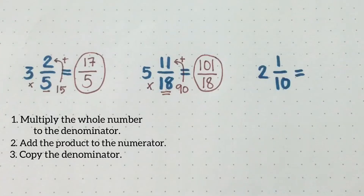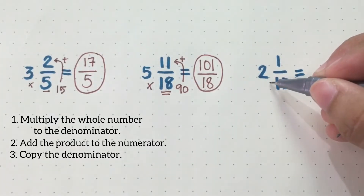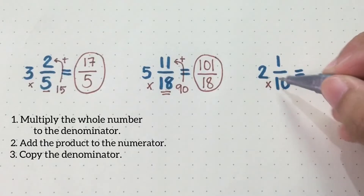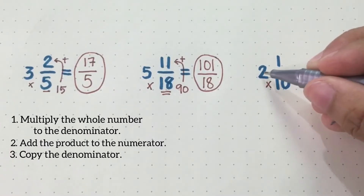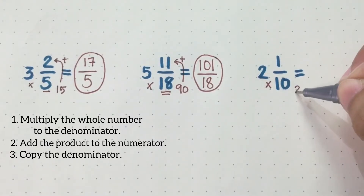Last example. Again, the first step is multiply the whole number and the denominator. 2 times 10, that's 20.